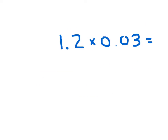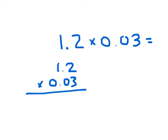I might be given a problem like 1.2 times 0.03. Writing it vertically, the first factor gives us 12 and the second factor, 0.03, gives us just 3. So the math fact helping us is 12 times 3, which is 36. But I need 3 decimal places in my answer and I only have two digits — 3 and 6. So I go 1 and 2, place a 0 to make room for position 3, then place another 0 in front, giving 0.036 with three decimal places.